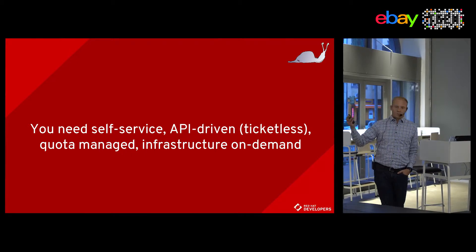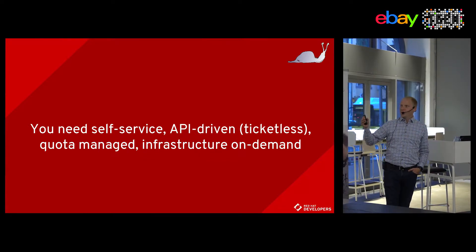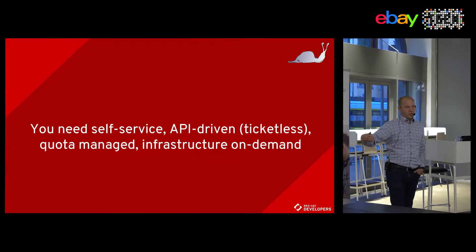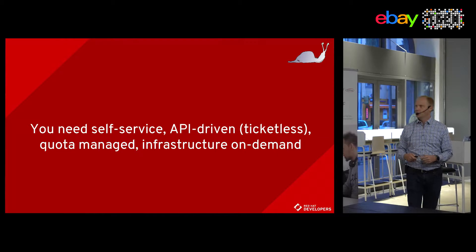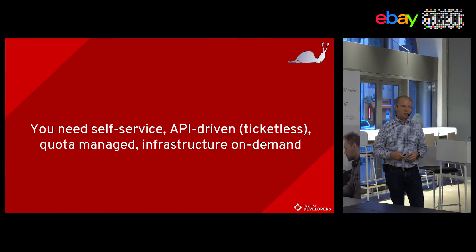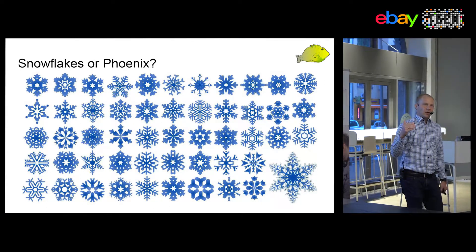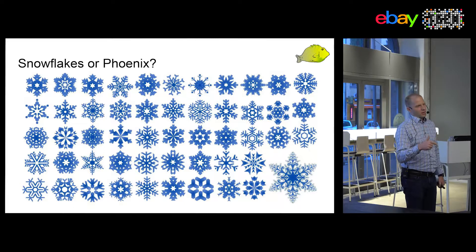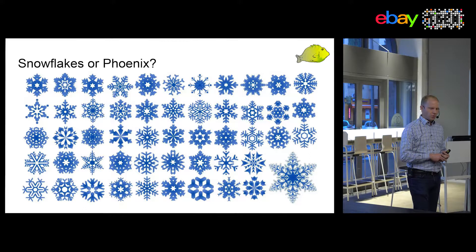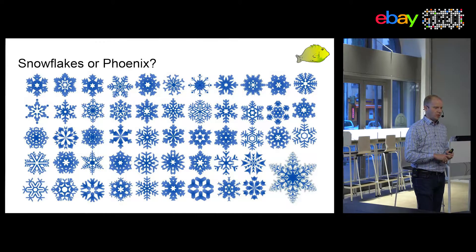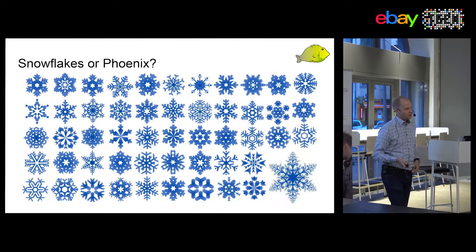Self-service is something great to use if it's there and if it works — something that is API-driven that you can program, without a ticket and a manual process at the end. Infrastructure on demand is one of the steps you take. You may have heard of the pets and cattle discussion — there's also the snowflakes and phoenix discussion. Every snowflake is a server or instance where somebody has SSH'd in and run some script and changed some configuration. This hurts you in the long run and is not maintainable.